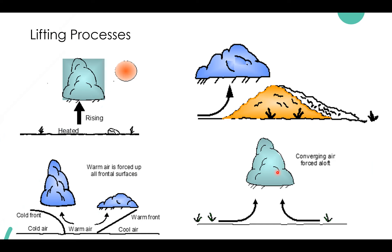Now I have diagrams showing the four lifting processes. In the upper left graphic, we have the sun; incoming solar radiation heats the Earth's surface, the air rises in the vertical, expands, cools, and forms these clouds. This is an example of free convection, which typically occurs on a hot summer day. It's just strictly heating of the surface, which causes the air to rise. Typically in the afternoon and early evening is when you get the highest probability of these air mass thunderstorms due to this free convection process.